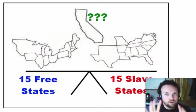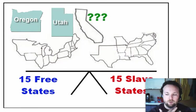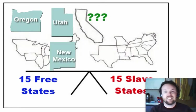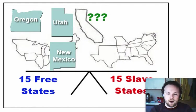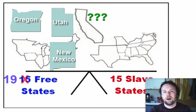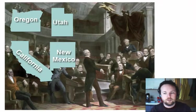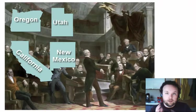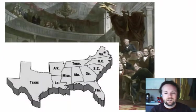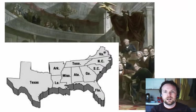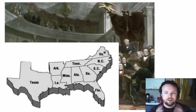It wasn't just California — Oregon, Utah, and New Mexico all wanted to enter as free states, which would severely tip the balance away from the South. Instead of 15 to 15, it would now be 19 to 15. Many Southerners felt that admitting these four states as free states would give them no chance in the Senate, and some even went so far as to propose to secede — meaning to remove themselves from the United States and start their own country.